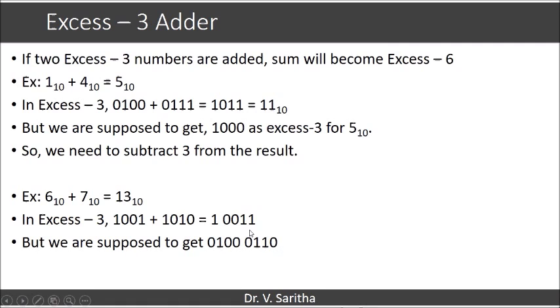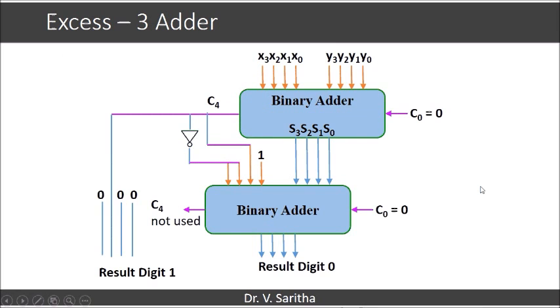So what happens here is, I get this number when we add 3 to this. So what actually we are supposed to do here is nothing but, when we are having a carry, we are supposed to add 3. When we don't have a carry, we are supposed to subtract 3 from the result. This is how the XS3 adder design is.